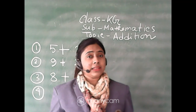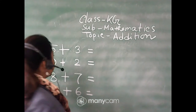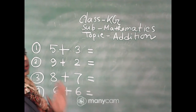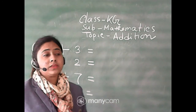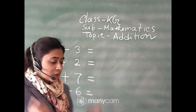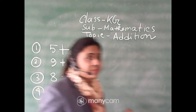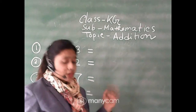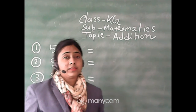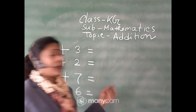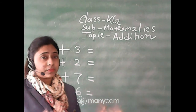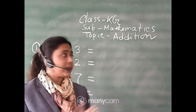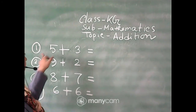You can see I have already written some additions on the board, and you will practice these types of additions regularly at your home. I am doing them on the board, and you will do them in your copy. So let's start — the process is the same, just the writing method is different. Here it is horizontal, whereas we practiced vertical additions.